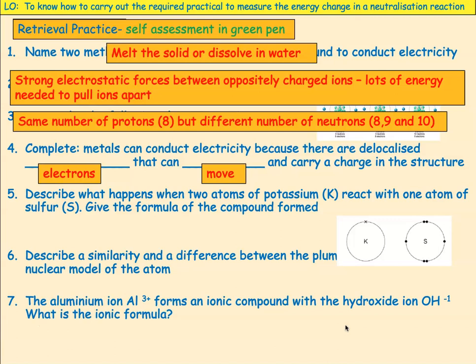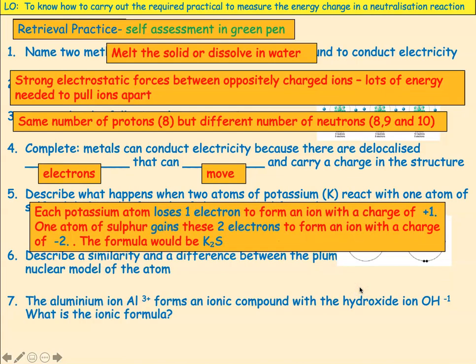Describe what happens when two atoms of potassium react with one atom of sulfur. Sulfur needs two more electrons to complete its outer shell, and potassium needs to lose one, which is why we have two of them. Each potassium atom loses one electron to form an ion with a charge of plus one. One atom of sulfur gains both electrons to form an ion with a charge of minus two. So the formula would be K₂S.